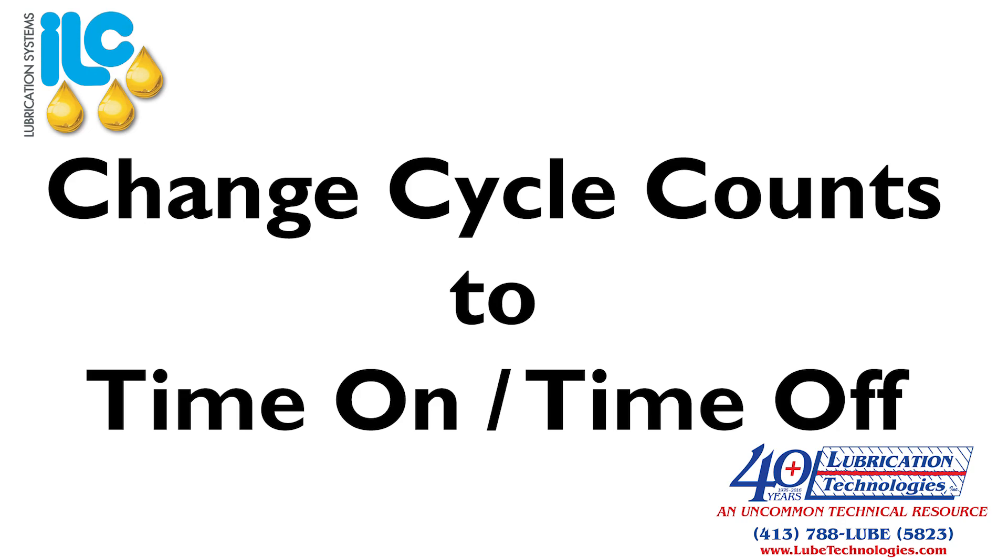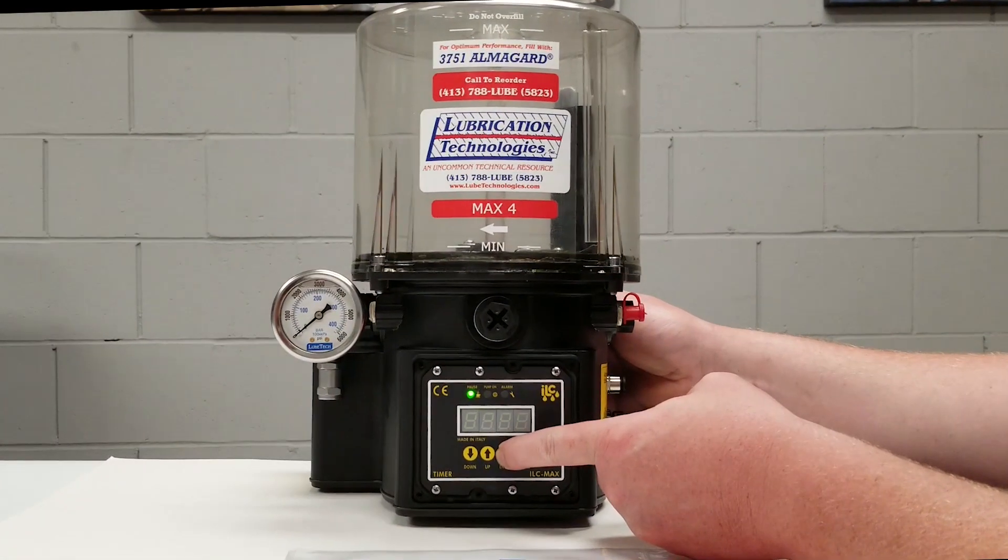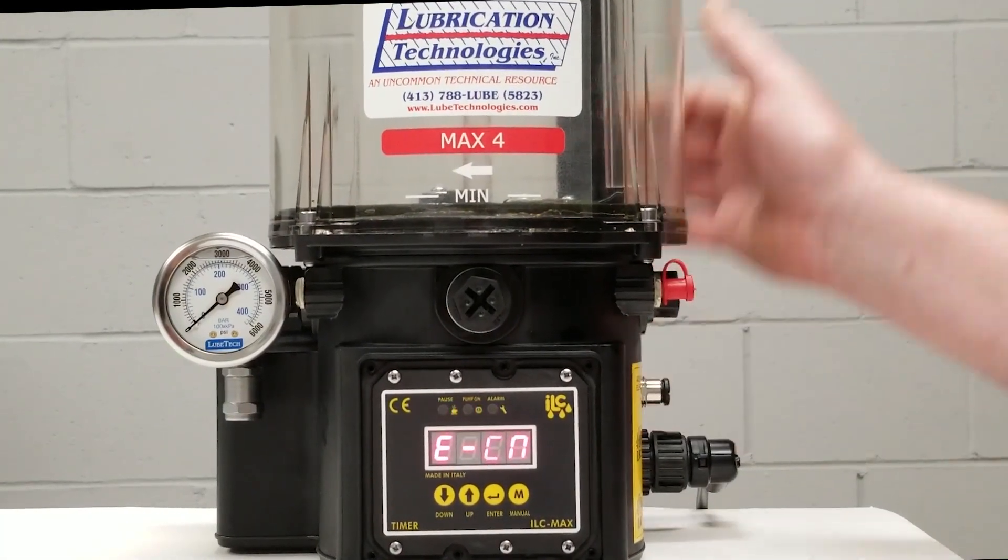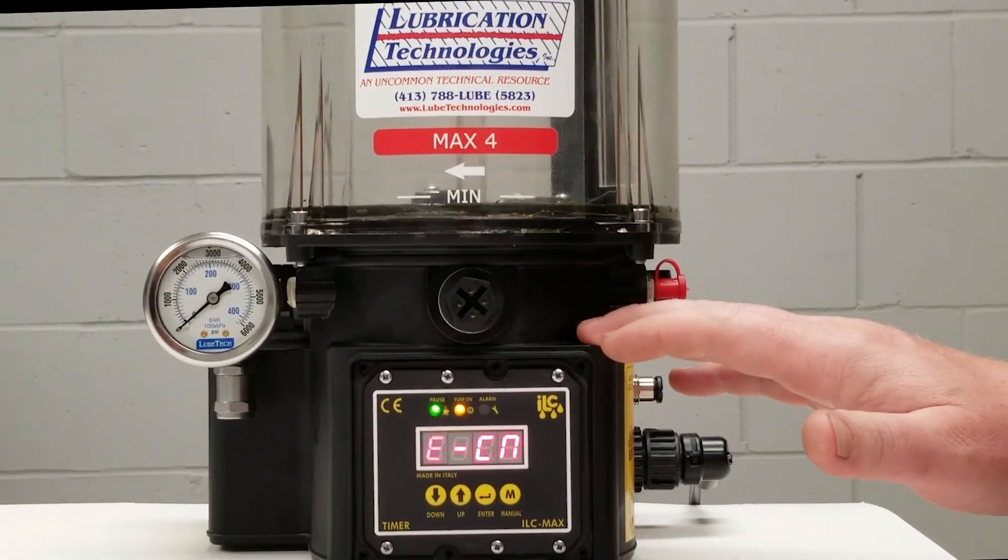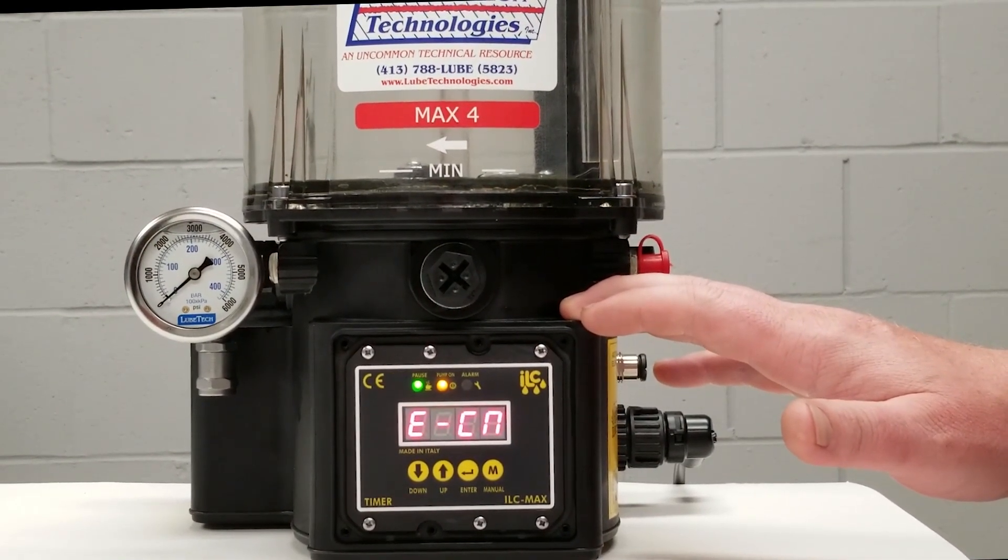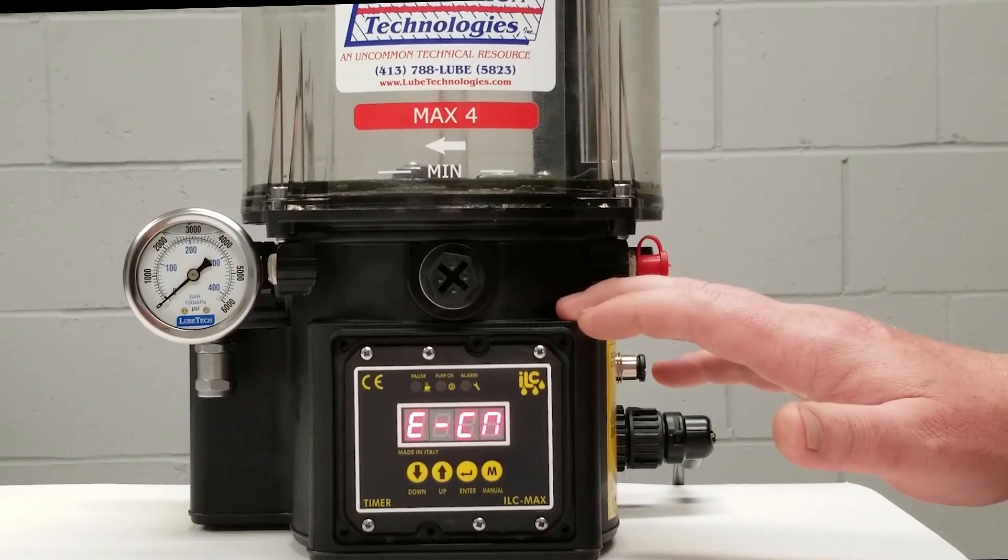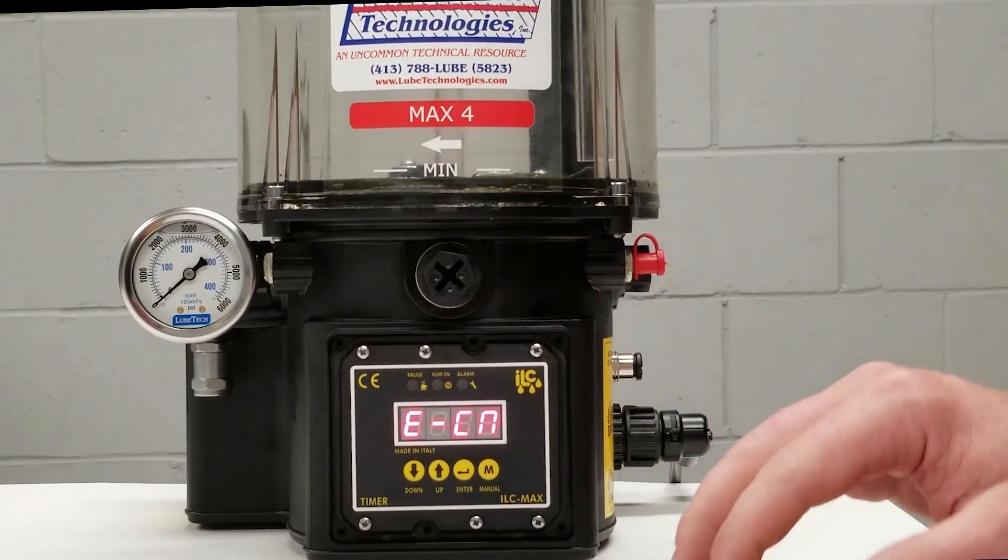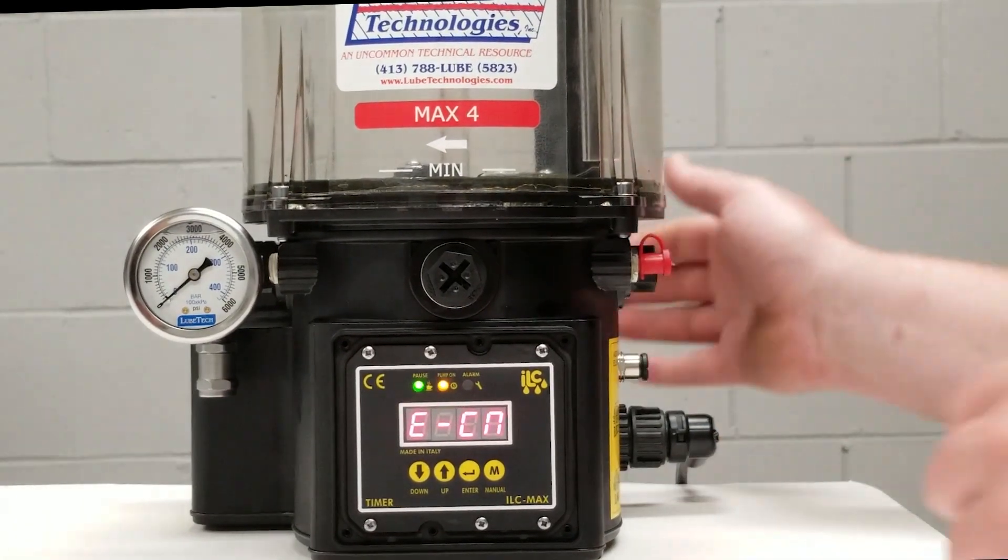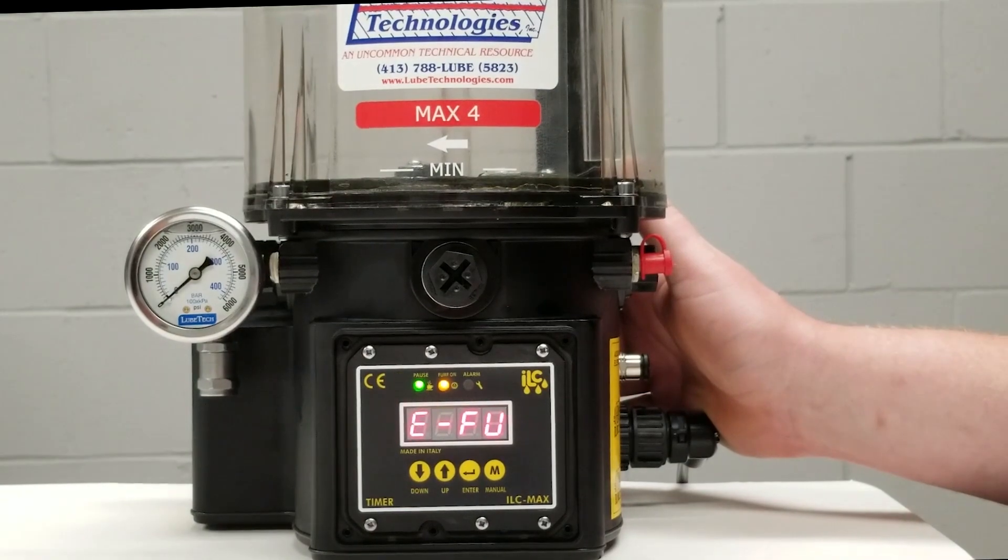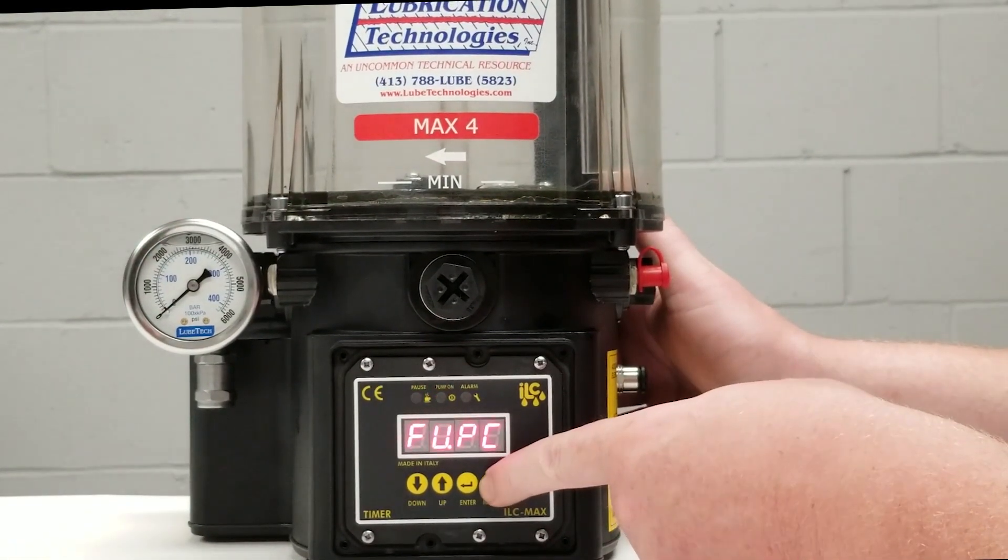We're going to press and hold our enter key to get into the programming mode. And what we're going to be doing is we're going to be changing our time from our cycle counts to time on and time off, because right now this pump is programmed to count rotations. So we're in our programming mode again which is E-CN. What we're going to do is go to E-FU and we're going to press our M button.